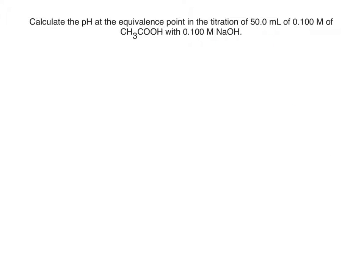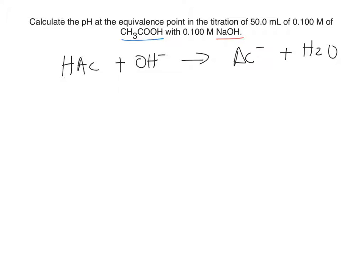Going back to our example, our weak acid is acetic acid and the strong base is sodium hydroxide. At the equivalence point, the reaction is: acetic acid plus OH⁻ produces acetate plus water. The stoichiometry for this reaction is 1 to 1 — 1 mol of acetic acid per 1 mol of hydroxide. So if both concentrations are the same, complete neutralization of the acetic acid will occur at 50 mL of sodium hydroxide, because that is the volume we have of the acetic acid.